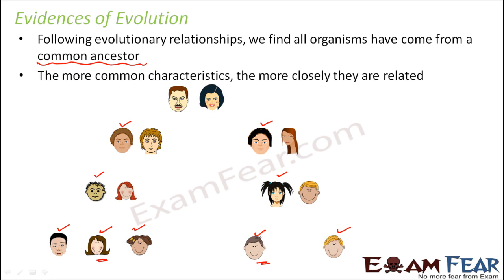Basically, the more similar you are, the more closely you are related. Two brothers are more closely related than two first cousins, who are more closely related than two second cousins. More similarities means more closely related, and less similarities means they are related but distantly. This is how the evidences of evolution were also deciphered to understand the relationship between organisms.